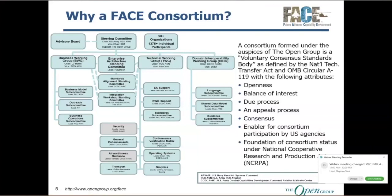Quick overview of the organization: there's a steering committee at the head, which ties into an advisory board for making sure we're aligned with industry trends. Underneath the steering committee, we're divided into three main working groups: a business working group, a technical working group, and the group that's talking right now — the domain interoperability working group.